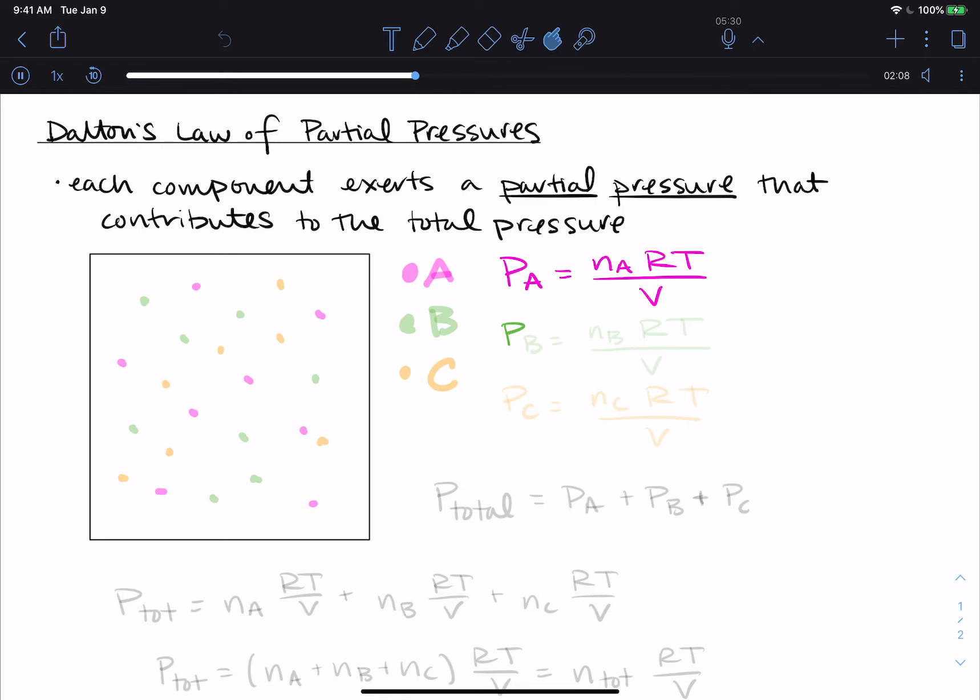So the pressure for gas B is going to be the number of moles of B times RT over V. And I don't need subscripts on RT or V because the entire sample is in the same volume, it's all at the same temperature and R is just a constant. And the pressure of C is the number of moles of C times RT over V.